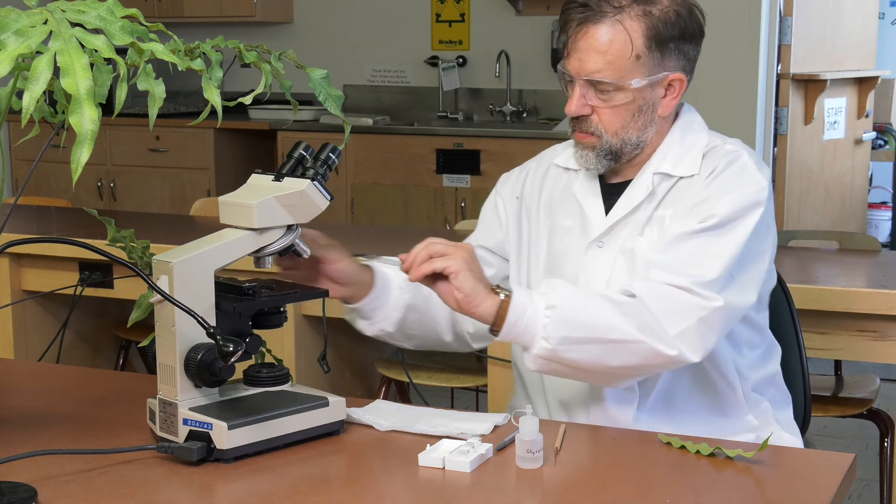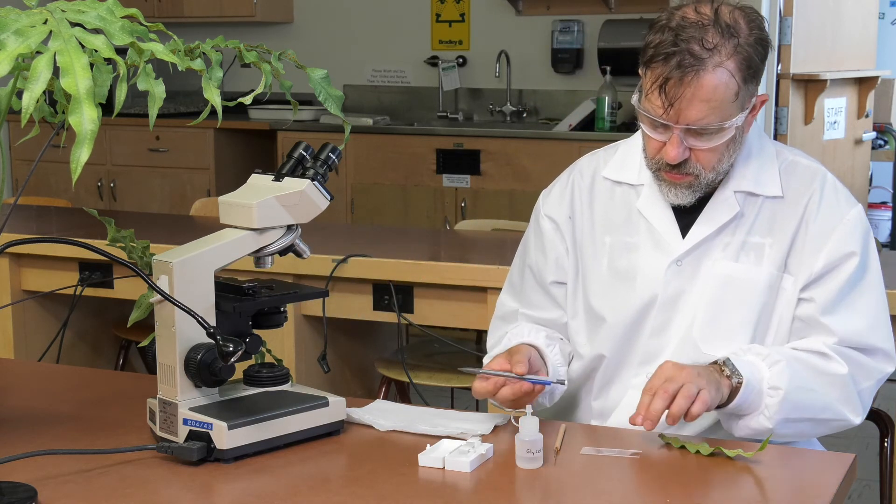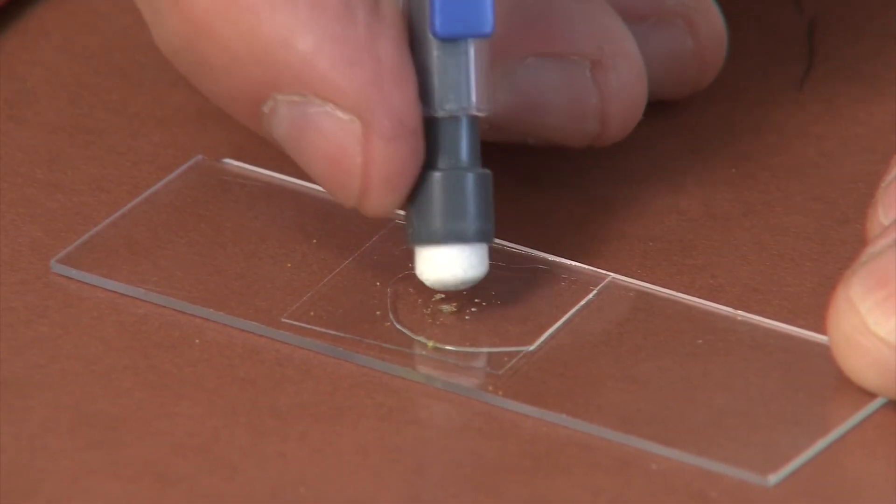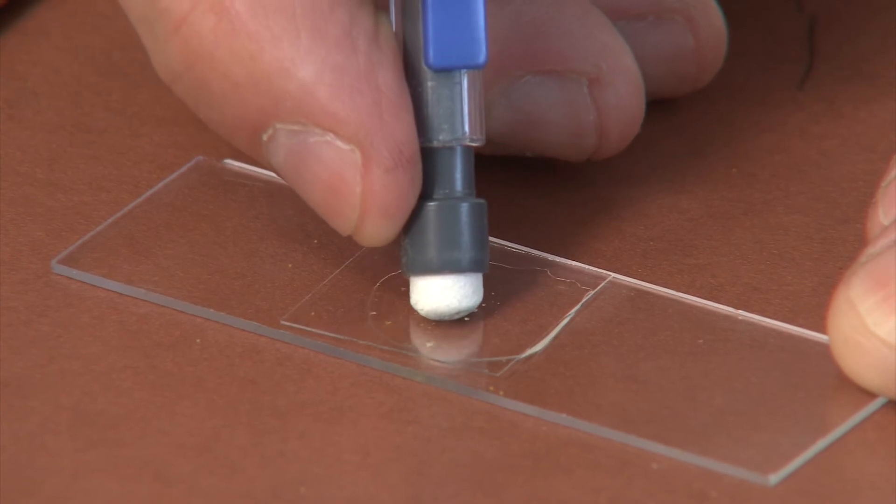Remove the slide from the microscope. Using the eraser end of your pencil, gently apply slight pressure to the cover slip. This will burst the sporangia.